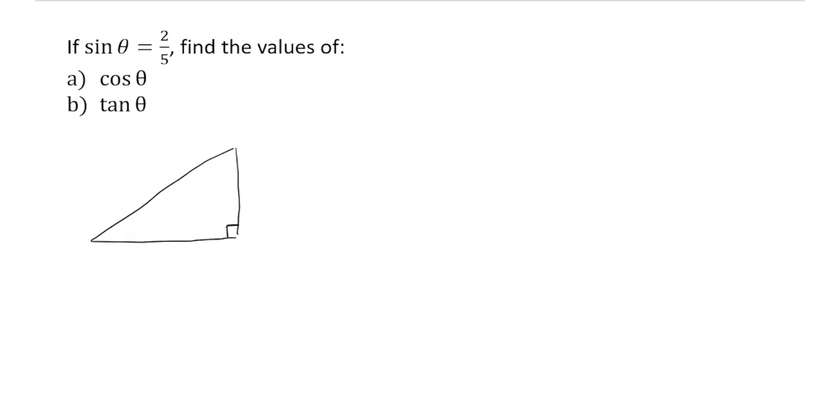We must draw a right angle triangle. We're going to label that angle there as theta. And then we can say that if sine theta is equal to two fifths, then we can label the opposite side as two and the hypotenuse side as five. Because sine,